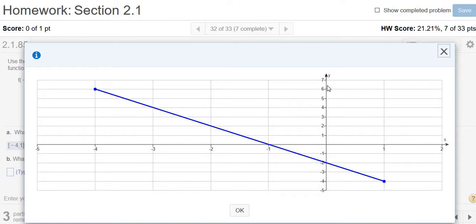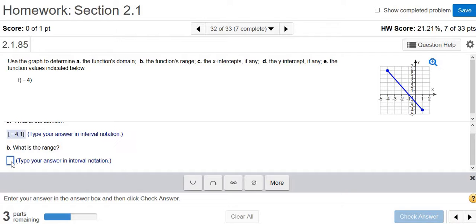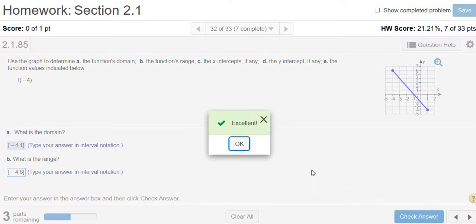The range would be negative 4 to 6. It's always bottom to the top. You go from the bottom up for domain, left to right for range. So negative 4 all the way to 6, that will give us the range. Bracket negative 4, comma 6. Check answer.